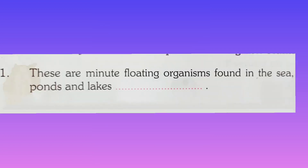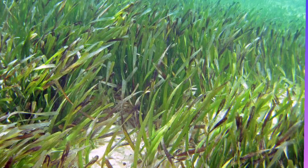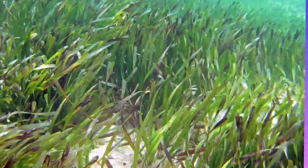These are minute floating organisms found in the sea, ponds, and lakes. What are they called, students? That is planktons. Planktons include plants and animals which float together in water bodies. They do not float to where the current passes.